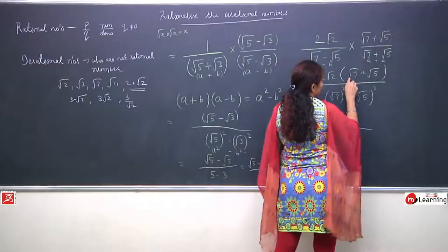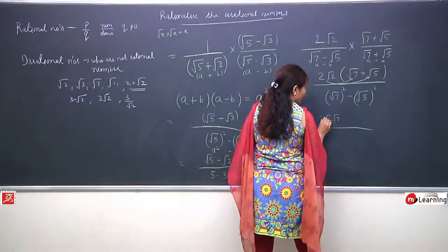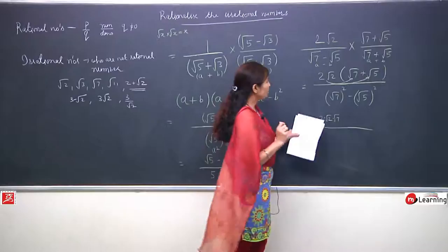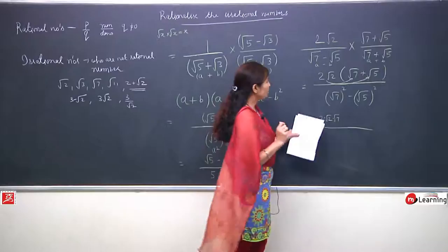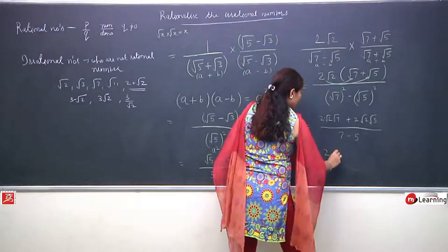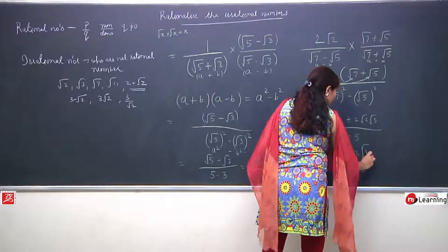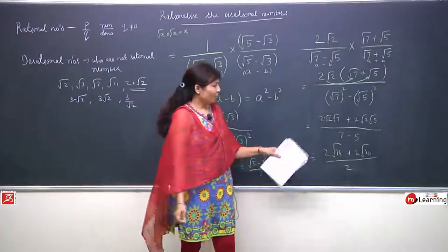This identity is especially used in rationalization so that all roots are removed. Simple multiplication will happen: 2 root 2 multiplied by root 7, and 2 root 2 multiplied by root 5 also. 2 root 2 multiplied by root 7 becomes 2 root 14. Square root 2 and square root 7 multiply to give root 14. Similarly 2 root 2 multiplied by root 5 gives 2 root 10. The denominator is 7 minus 5.